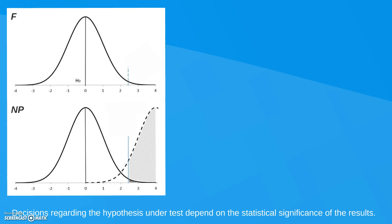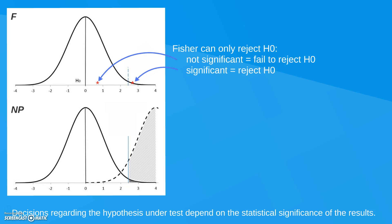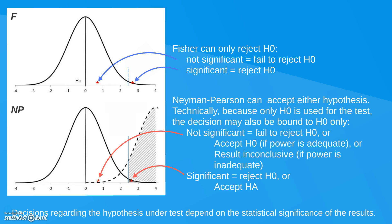The decision depends on where the research result falls under the null hypothesis and the cutoff decided. In the case of Fisher, if the result is not significant, you fail to reject the null hypothesis — because you only have one hypothesis in the test. If the result is significant, you reject the null hypothesis. In the case of Neyman-Pearson, you can accept either hypothesis depending on where the research result falls, because you have two hypotheses. A not-significant result could be interpreted as failing to reject the null hypothesis, or accepting the null hypothesis if power is adequate, or as inconclusive if power is inadequate. When the result falls beyond the threshold, you can interpret it as rejecting the null hypothesis or as accepting the alternative hypothesis.